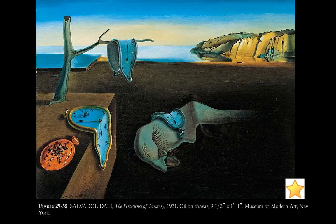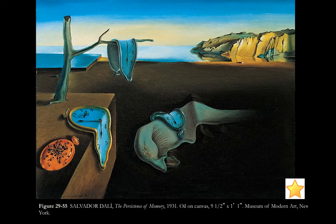Salvador Dalí is perhaps the most famous surrealist. In 'The Persistence of Memory,' we have melting clocks and ants crawling out of the face of a clock — one of Dalí's favorite recurring themes. It's not exactly abstract, and it's open-ended enough that it can mean a lot to many people and has been used throughout popular culture.